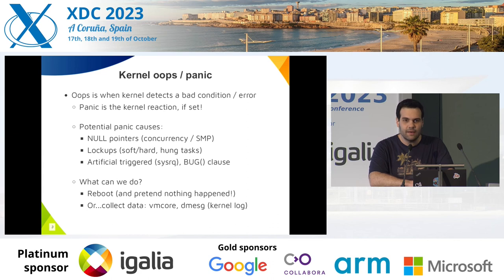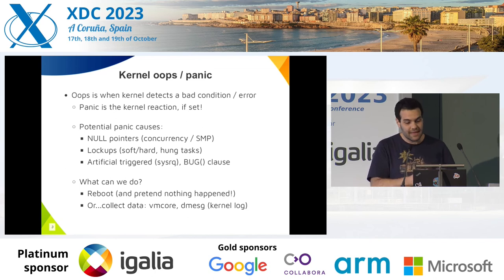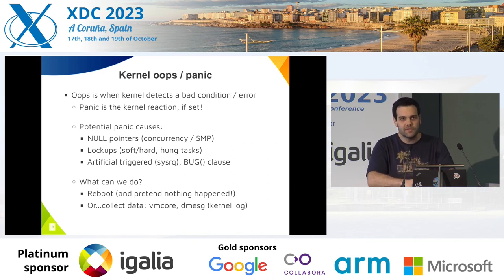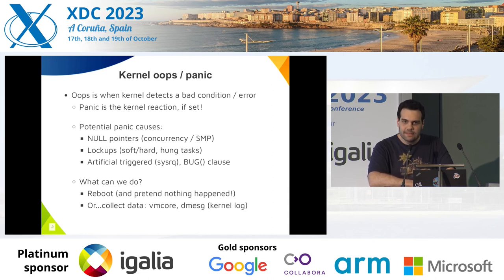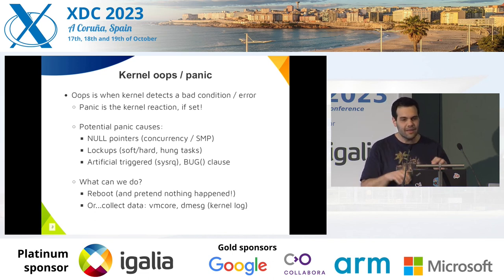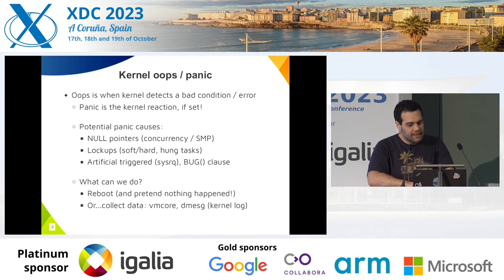An oops is when the kernel detects an error, a bad condition. A panic is the reaction of the kernel — for example, you could set it to reboot. Some potential panic causes are null pointers, concurrency issues where one code is writing and another is reading with no good locking. Also lockups: soft lockups, hard lockups, hang tasks. A hard lockup is when kernel code runs in IRQ context for too long, so other tasks cannot run. You can configure a panic in these cases. There is also artificially-triggered panic through SysRq, bug clauses in the code, and so on.